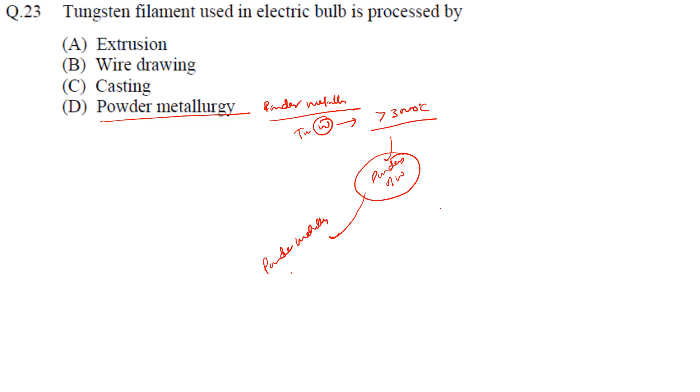We do the sintering process so all happens at a lower temperature than this 3000. It may happen at 1500 or 1400 degrees Celsius, so it saves tremendous amount of cost. That's why it is done by powder metallurgy.